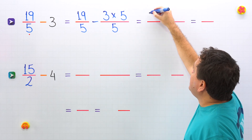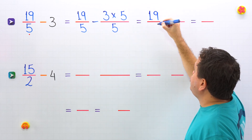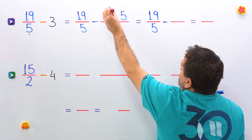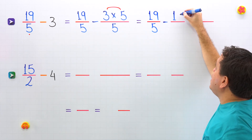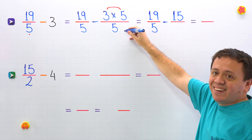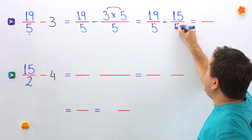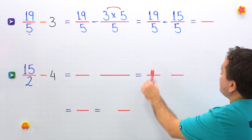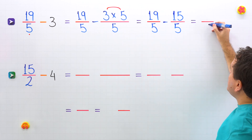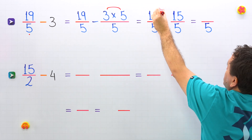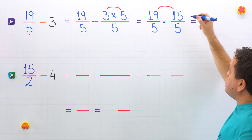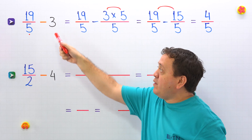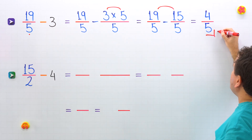Here we have 19 fifths, minus, and now we multiply 3 times 5, which gives us 15. The denominator stays the same — 5. We subtract these two fractions with the same denominator by subtracting the numerators: 19 minus 15 gives us 4. In that way, 19 fifths minus 3 gives us 4 fifths.